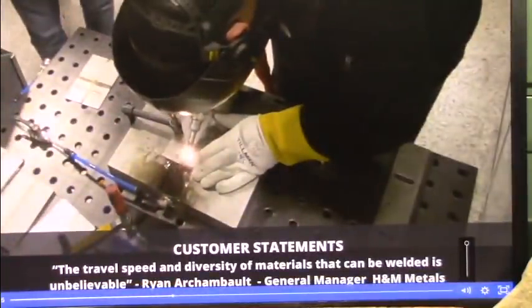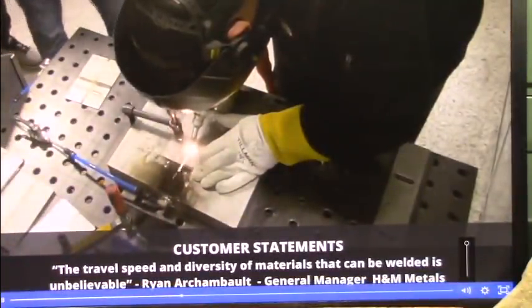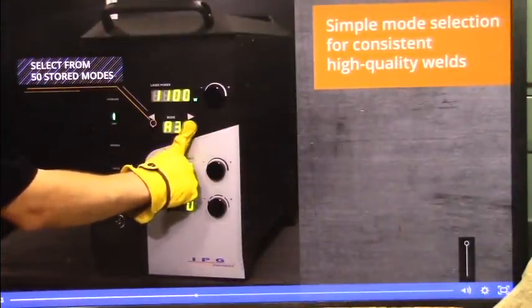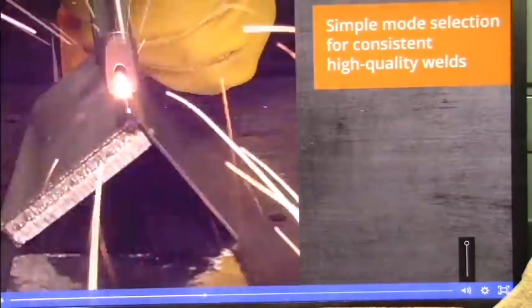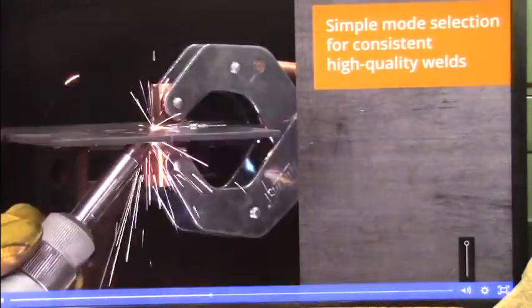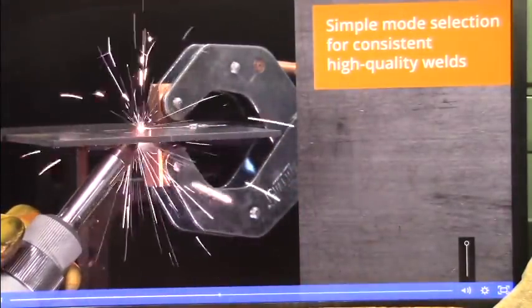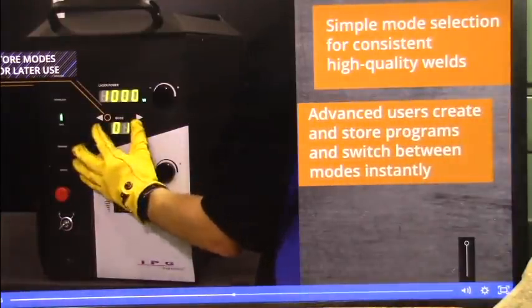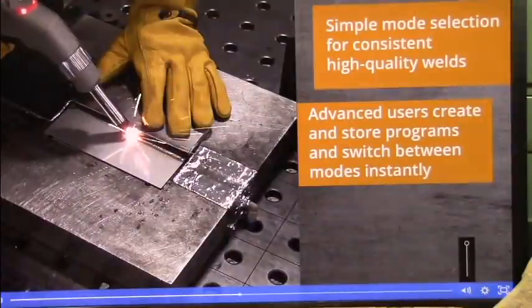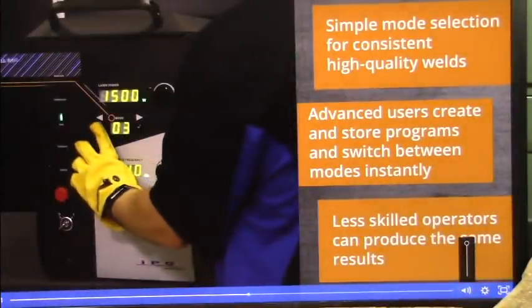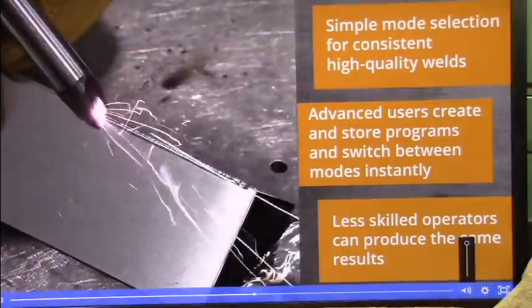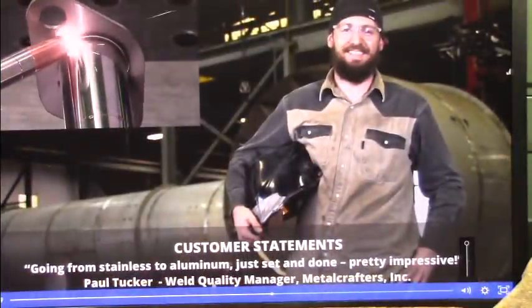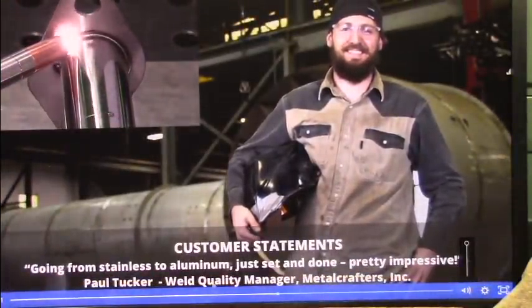The travel speed and diversity of materials that can be welded is unbelievable. Built-in parameters allow operators to instantly switch between 50 stored modes with optimized settings for continuous welding on jobs with different material and thickness combinations, dramatically increasing productivity. For even more flexibility, operators create and store customized parameters for later use. Less skilled operators recall these modes to produce the same consistent results, decreasing labor costs while preserving high-quality welds. Going from stainless to aluminum, just said and done. Pretty impressive.